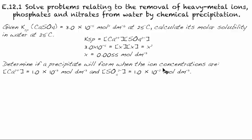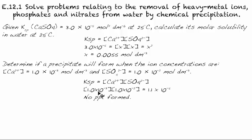Next, determine if a precipitate will form when the ion concentrations are [Ca²⁺] = 1.0 × 10⁻³ and [SO₄²⁻] = 1.0 × 10⁻². We set up the same expression, substitute in the values, and end up with 1.0 × 10⁻³ × 1.0 × 10⁻² = 1.0 × 10⁻⁵. We compare that to Ksp, which is 3.0 × 10⁻⁵. Since the calculated product is smaller than Ksp, there's not going to be a precipitate formed. A precipitate only forms when the solubility product exceeds Ksp.